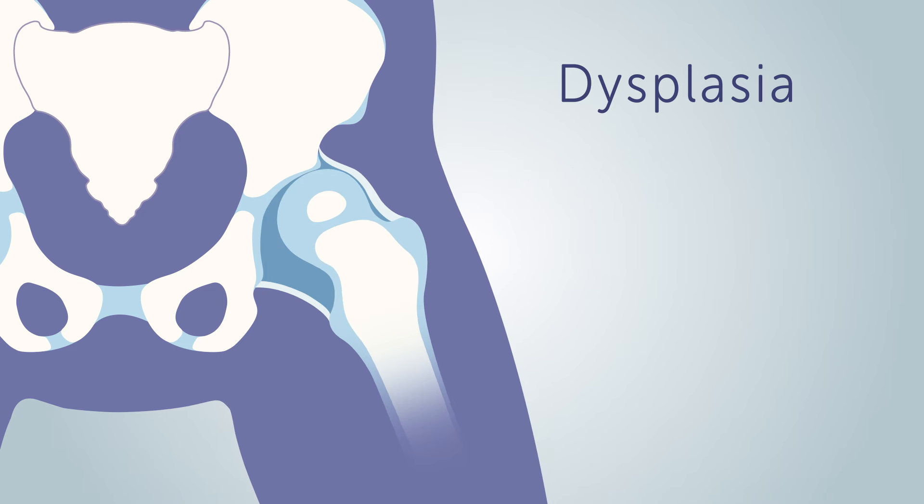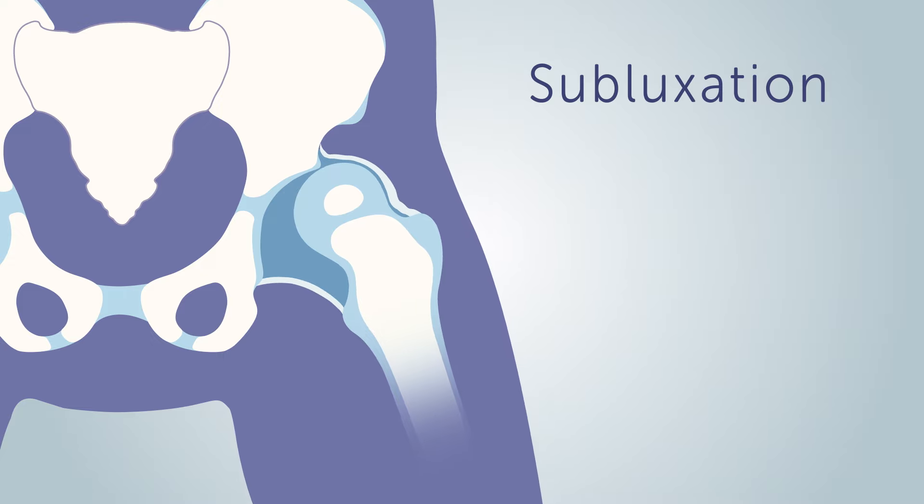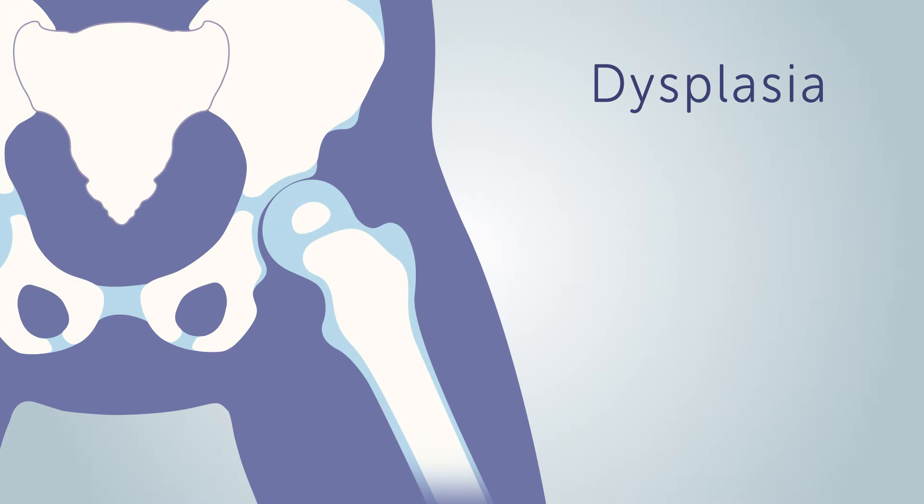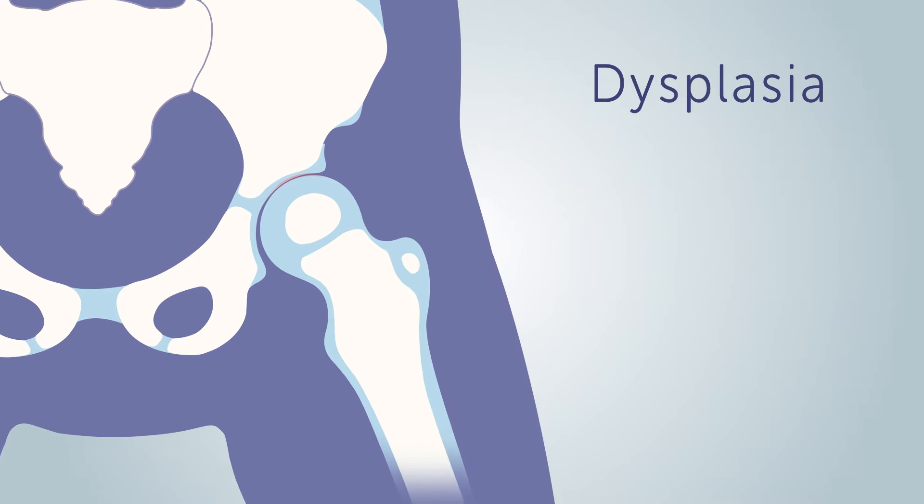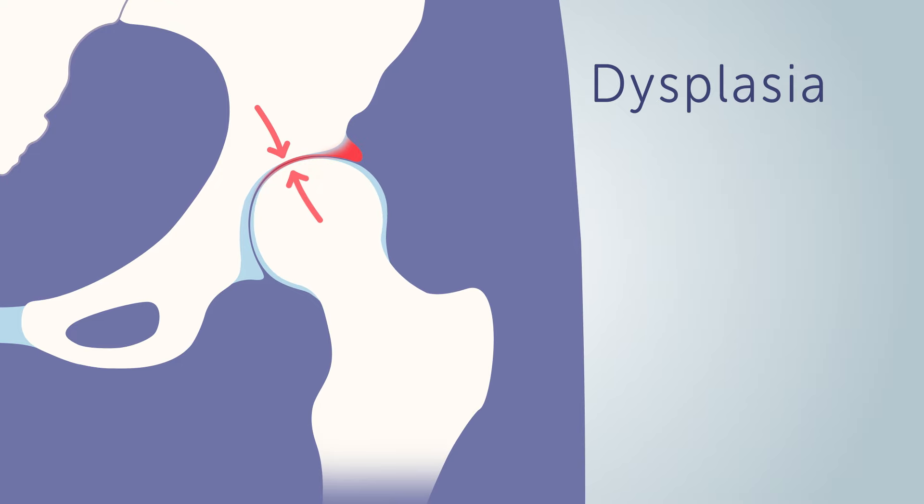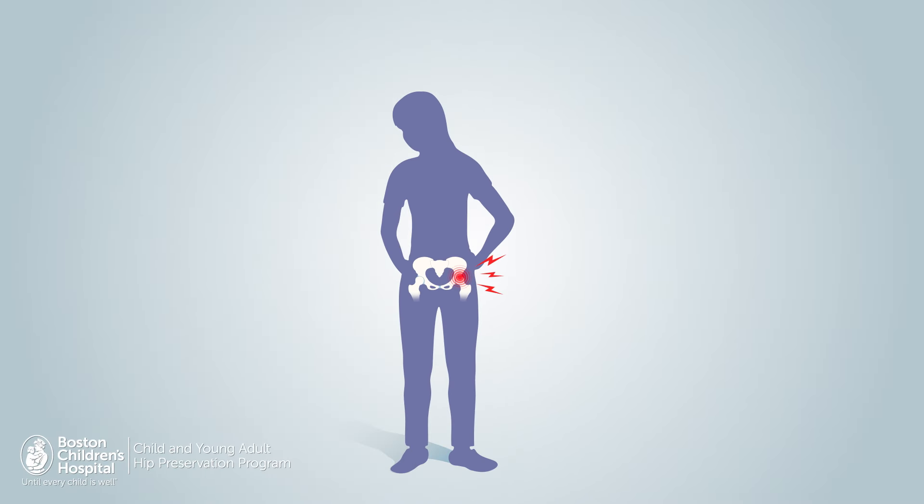This can cause the femur to move out of place, called subluxation, and may even become completely dislocated. Sometimes however, a dysplastic hip won't cause any trouble until later in life. Over time it damages the labrum and wears down the cartilage, causing hip pain and reduced tolerance to exercise. The good news is that hip dysplasia can be treated in a number of ways.